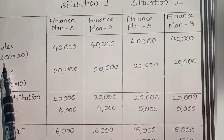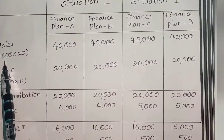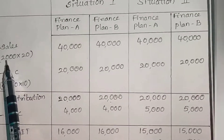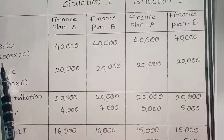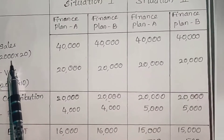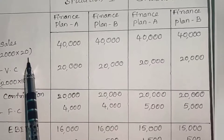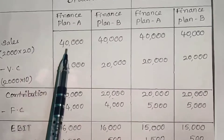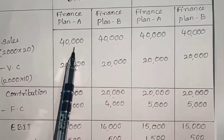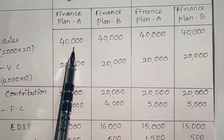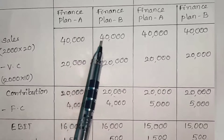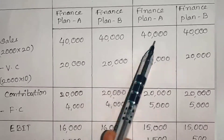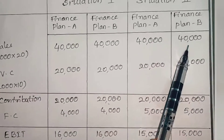Installed capacity is 2000 units. So 2000 units multiplied by selling price of ₹20 per unit gives sales of ₹40,000. Sales are ₹40,000 across all four columns — situations 1 and 2 under both financial plans A and B.